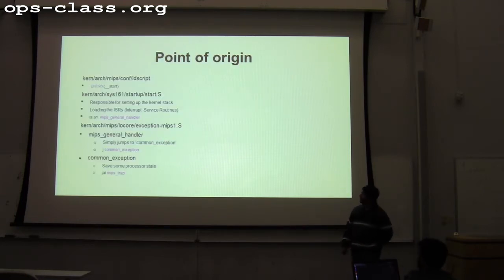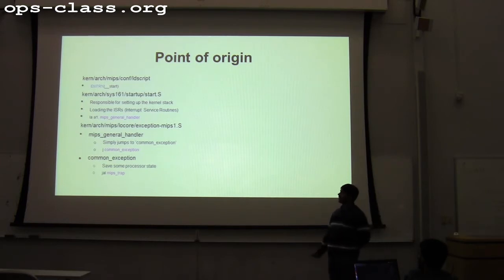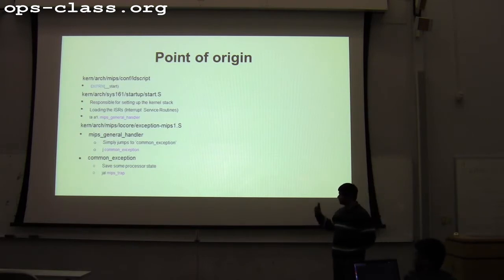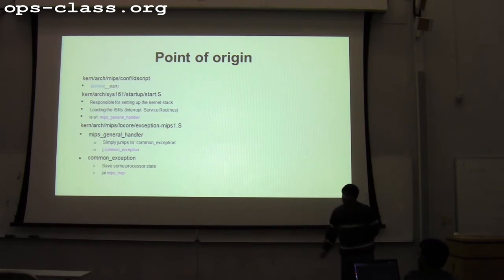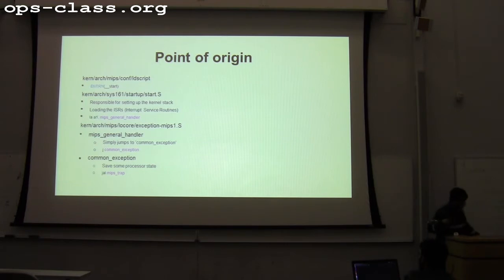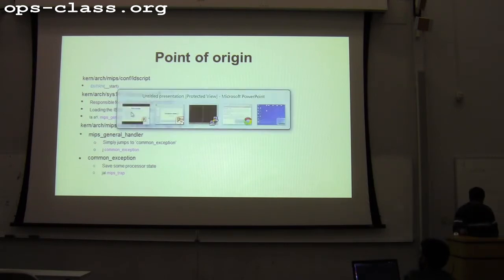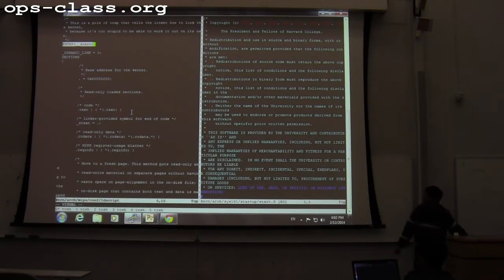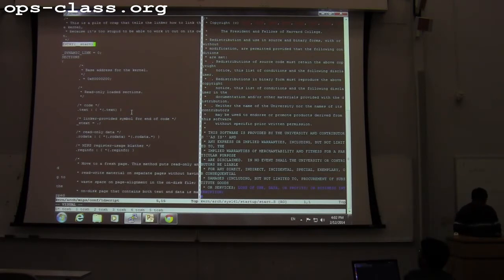So where and how does OS 161 start? It all starts at the LD script. The loader script basically tells the loader that the starting point for the kernel is actually this function called start. This can be found in the start.s file. This is the entry point — it's set up to start at the function called __start.